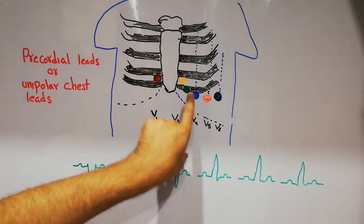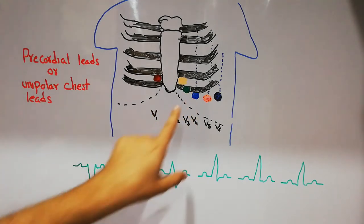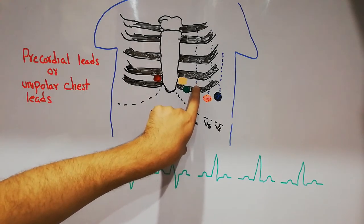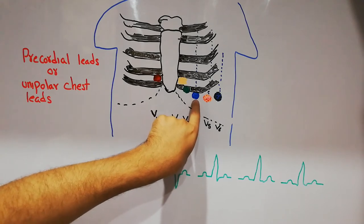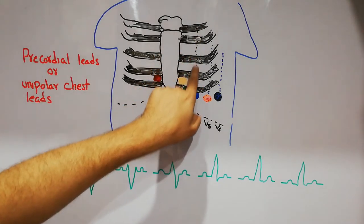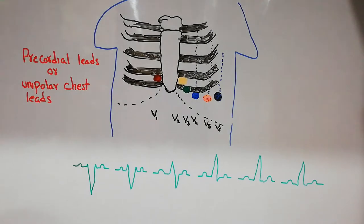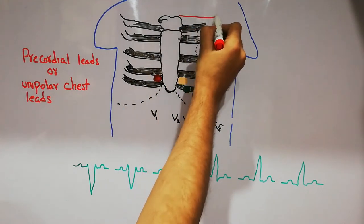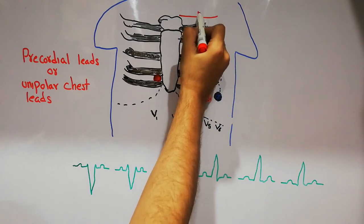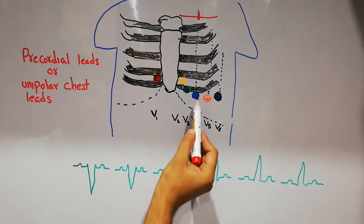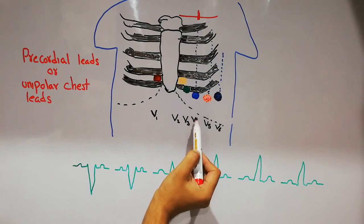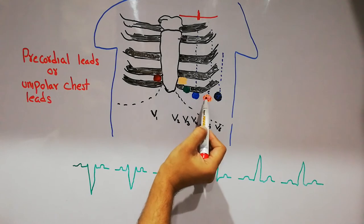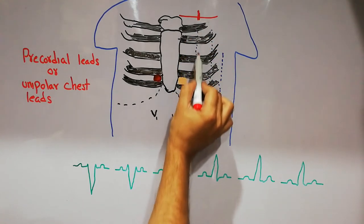The fourth chest lead, V4, is present in the fifth intercostal space on the mid-clavicular line. Here is the fifth rib and the fifth intercostal space. The mid-clavicular line runs through the midpoint of the clavicle, so V4 is placed at the fifth intercostal space on the mid-clavicular line.